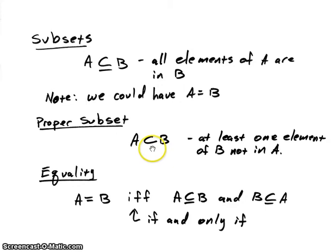To indicate that there's a proper subset, we can use the symbol without the line underneath it, meaning that it's not possible that they'll be equal to each other. In this case, we would mean that there's at least one element in the set B that is not in the set A.